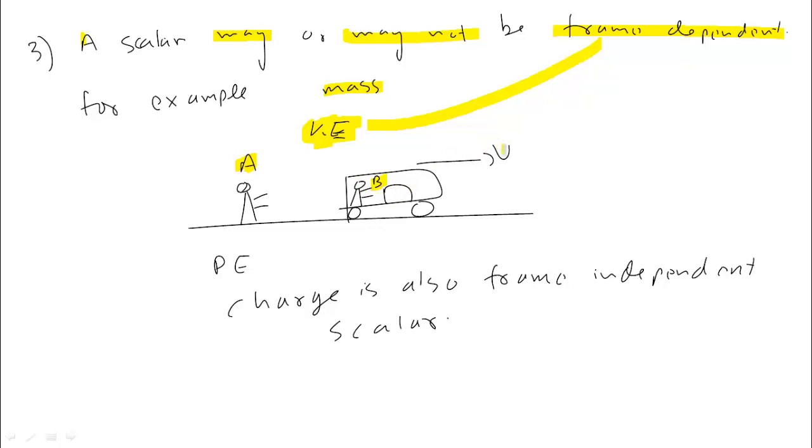According to B, the box's kinetic energy cannot be ½mv² because he doesn't see it moving. According to him, its kinetic energy is zero. So kinetic energy is frame dependent.